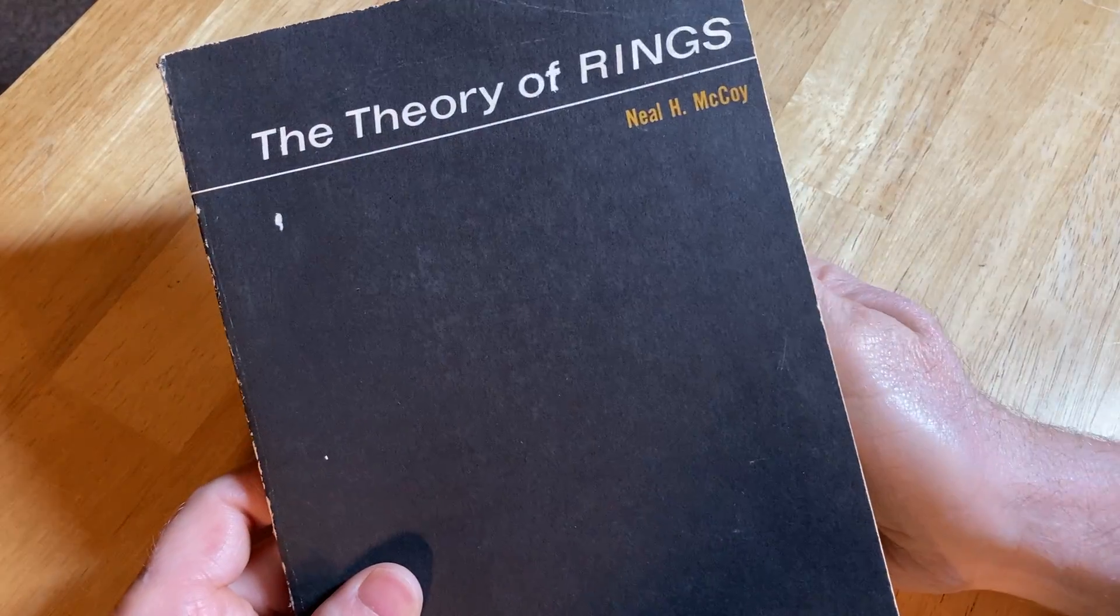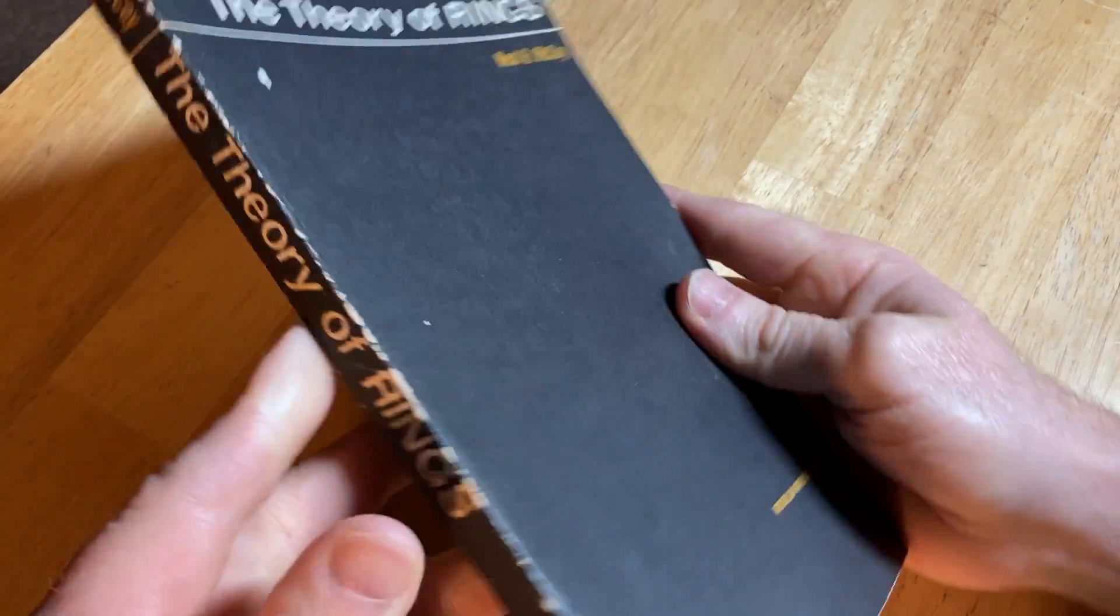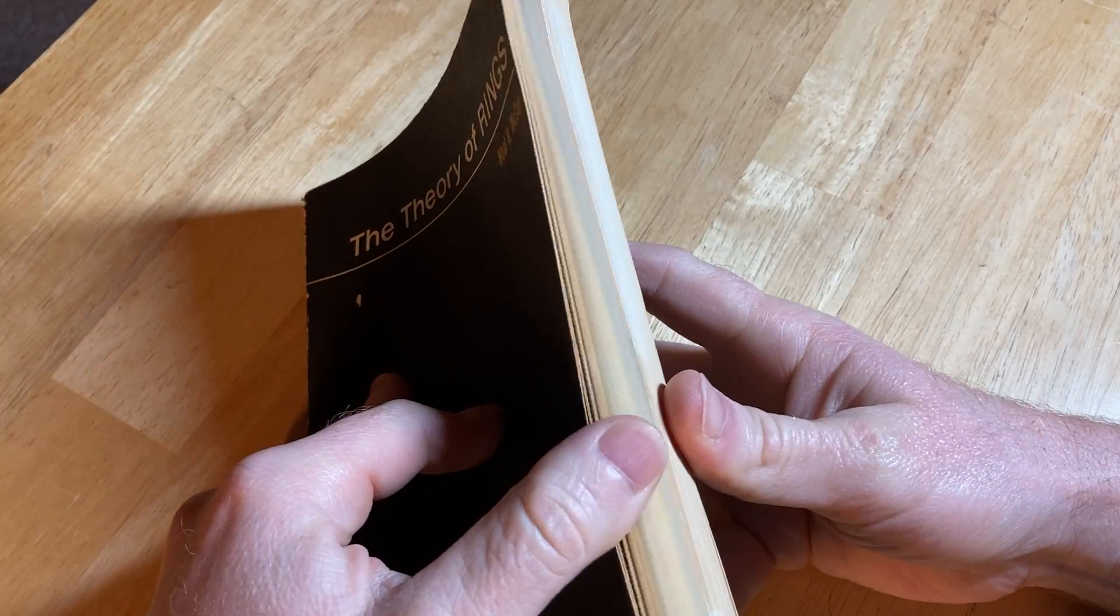The Theory of Rings. This is by Neil H. McCoy. Let's take a look at this book here.